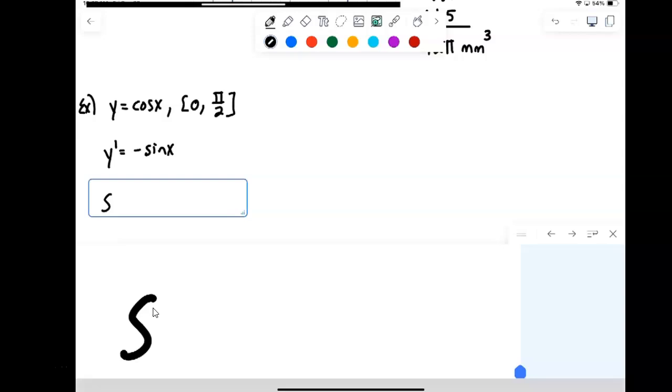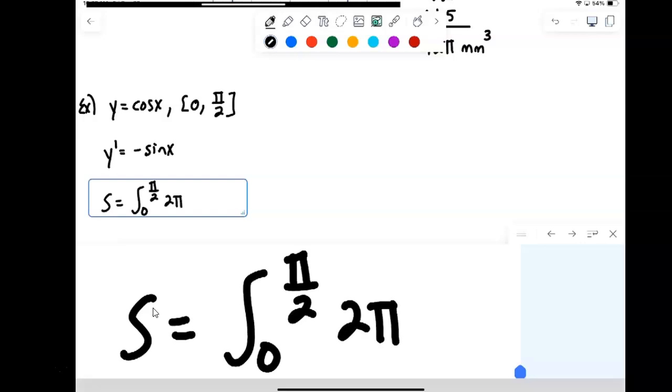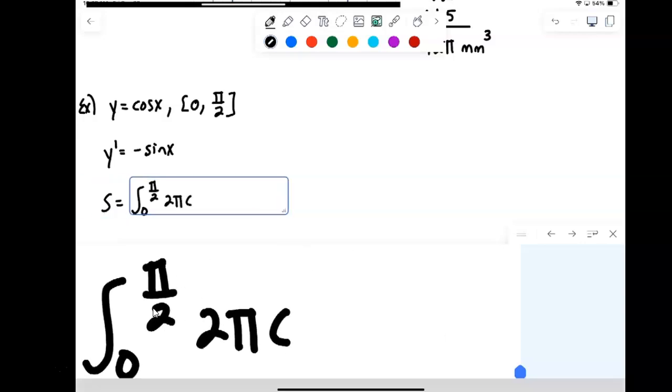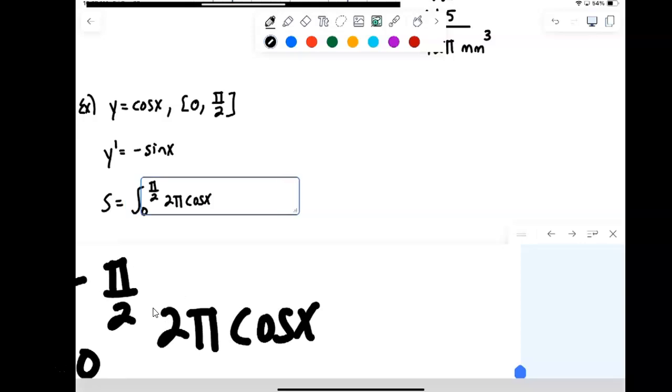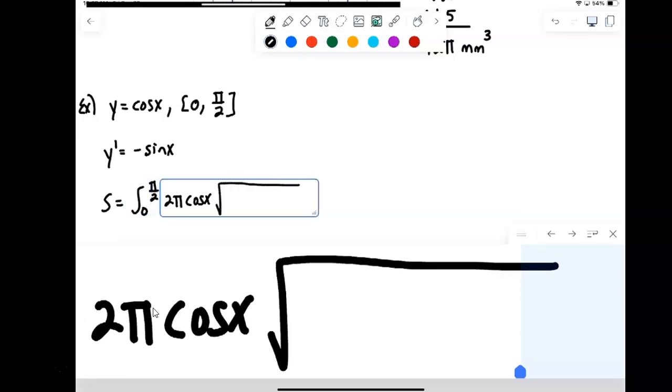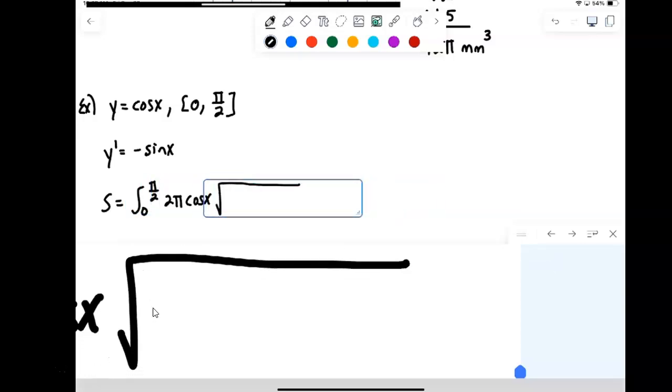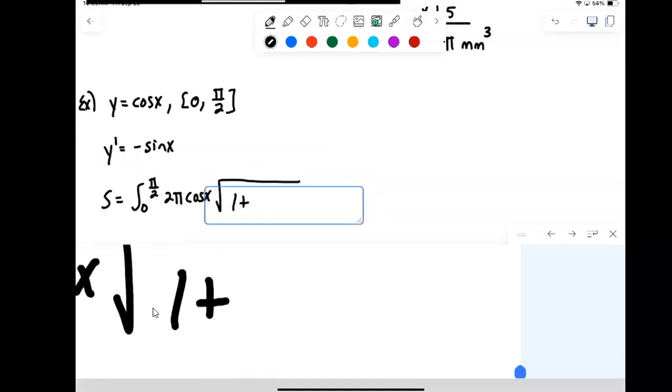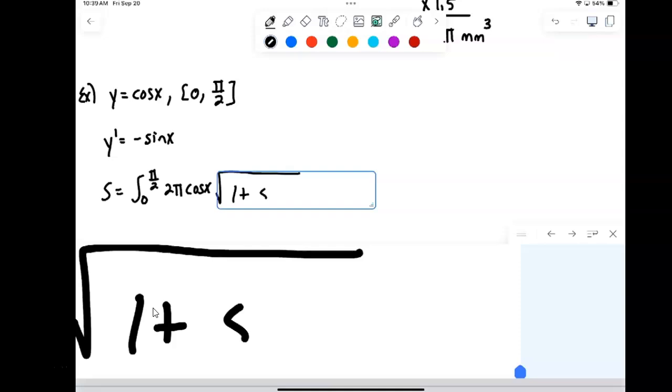So the surface area will be the integral from 0 to pi over 2 of 2 pi times my function, times the square root of 1 plus the derivative squared. So negative sine squared would actually just be positive sine squared x dx.